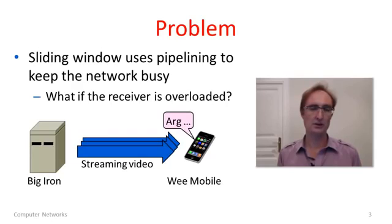The sliding window is already using a lot of pipelining to make sure we keep the network busy. But what we want to do with Flow Control is make sure that in doing so, even though we're keeping the network busy, we're not inadvertently overloading the receiver. You might have, for instance, a small mobile phone that's got to be a little wimpier compared to some big powerful server in the cloud, which could send data at it possibly faster than the phone could receive. We'd like for our protocols to be able to handle this case.